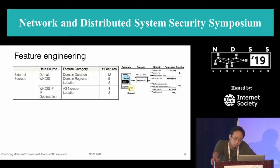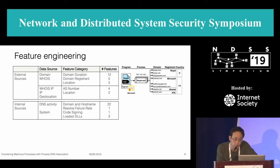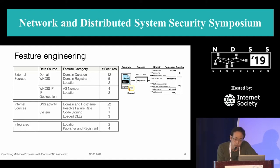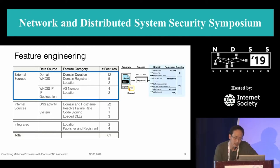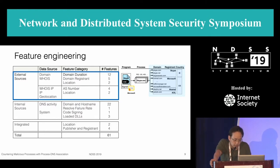With this framework, we collected three different types of information. The first is from external sources related to DNS queries. The second is from internal sources inside the host related to the process and program that issues the DNS queries. The third is cross-checking and cross-comparing features from different sources. In total, we examined 61 features.